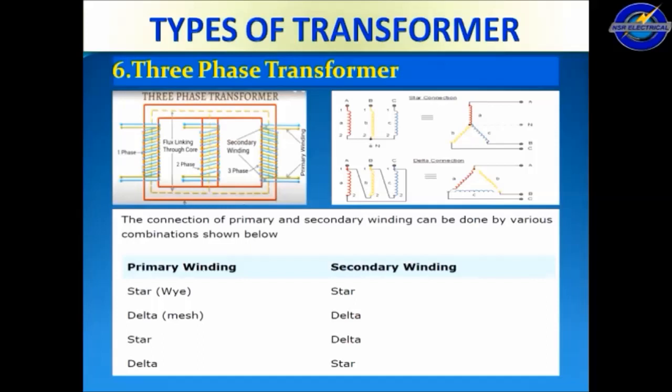This is the three-phase transformer windings. The connection of primary and secondary windings can be done in various combinations: primary star to secondary star, delta to delta, star to delta, and delta to star.